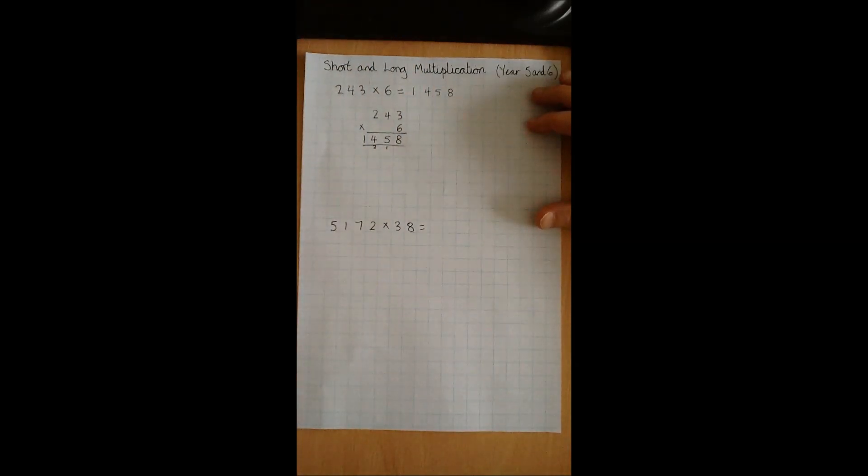Moving on from that, we are now looking at long multiplication, which is a 4-digit number multiplied by a 2-digit. And we have 5172 multiplied by 38. We would lay out the calculation in very much the same way as short, making sure that each digit is in the correct column.